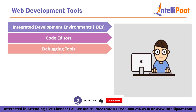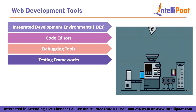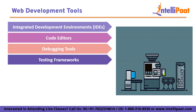Debugging tools like Xdebug and ZendDebugger help developers identify and resolve errors and issues in PHP code. These tools provide breakpoints, step-by-step code execution, and variable inspection, enabling developers to track down bugs and optimize code performance. Testing frameworks: PHP testing frameworks like PHPUnit facilitate automated testing of PHP code. They provide a set of tools and functions for writing unit tests, functional tests, and integration tests, helping developers ensure reliability and correctness of the application.